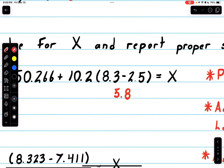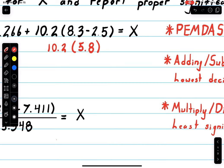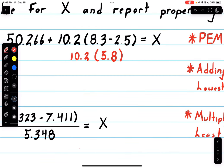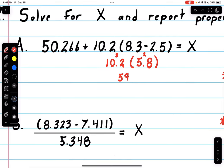Then PEMDAS again, we multiply this by 10.2. With multiplying and division we go with the lowest amount of sig figs. We have three sig figs and two sig figs, so we go with two. Let's multiply: 5.8 × 10.2 = 59.16. But we want the least amount of sig figs, so just 59. Now we have plus 50.266.